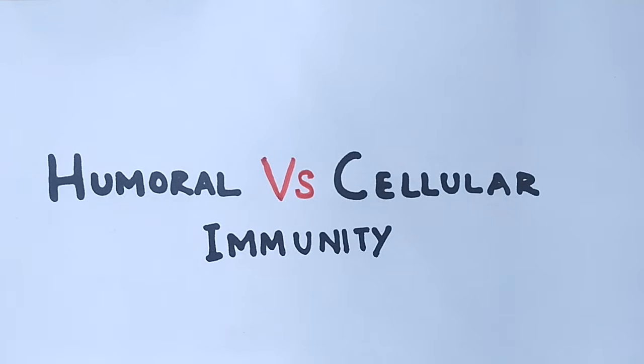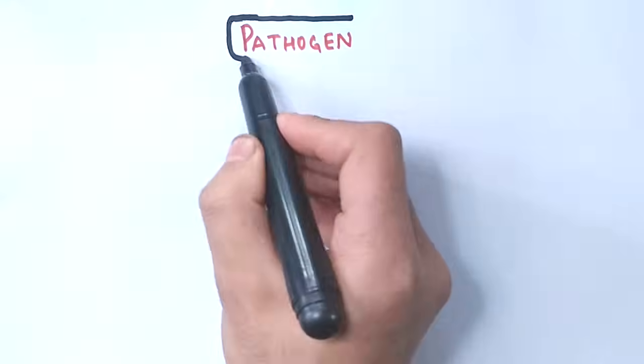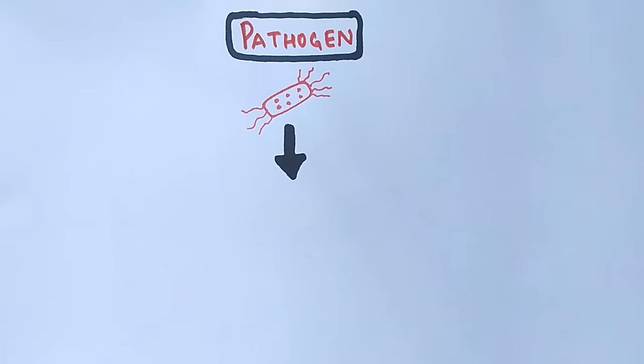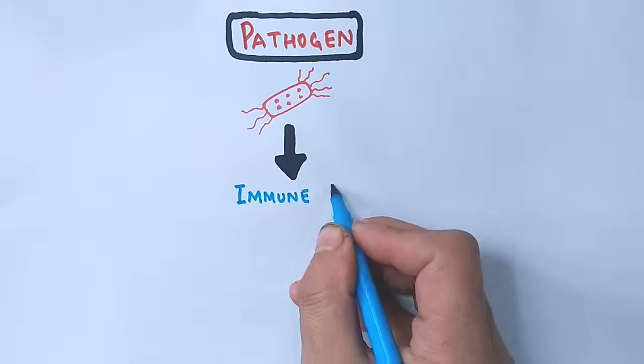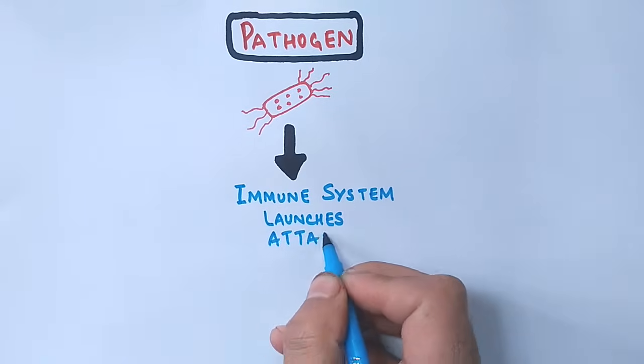To understand humoral and cellular immunity, we see when a pathogen enters your body, the immune system first must control it. In that case, the immune system launches an attack for the pathogen to be eliminated.